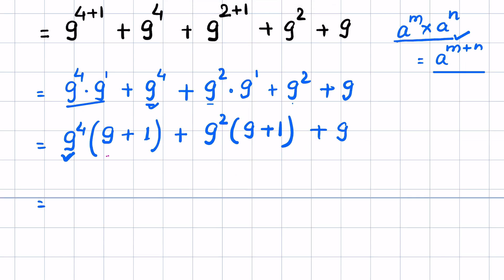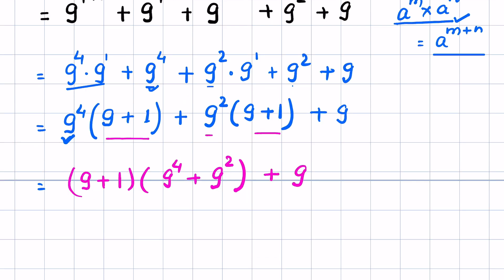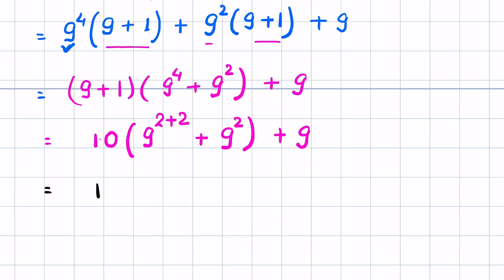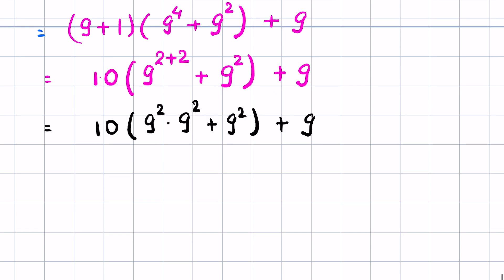Now we can take (9 + 1) as common. So write (9 + 1) bracket times (9⁴ + 9²), bracket closed, plus 9. Then 9 + 1 is 10, and we have 10 times (9⁴ + 9²) plus 9. We can write 9⁴ as 9^(2+2), giving us 10 times (9² × 9² + 9²) plus 9.